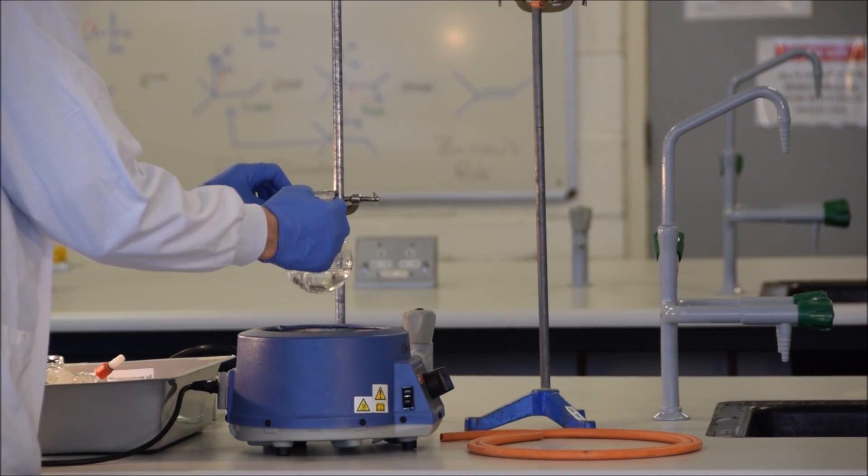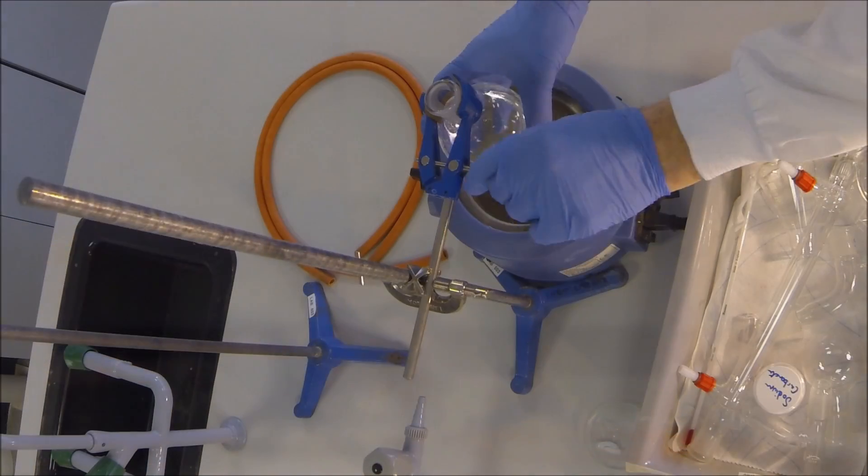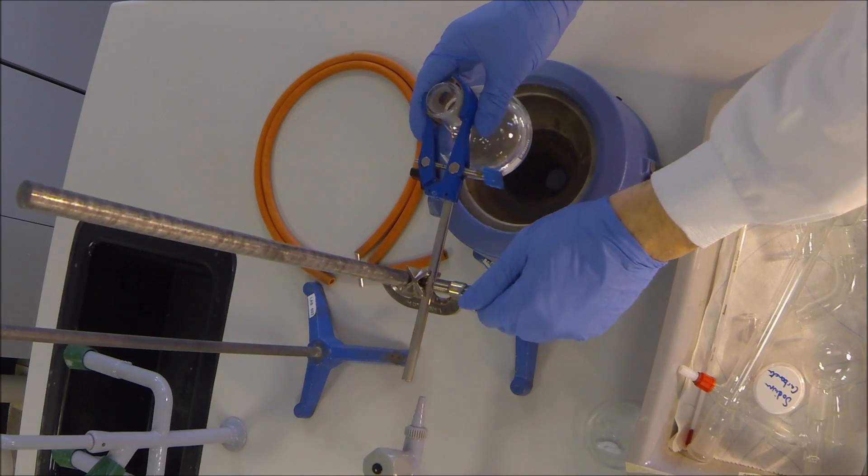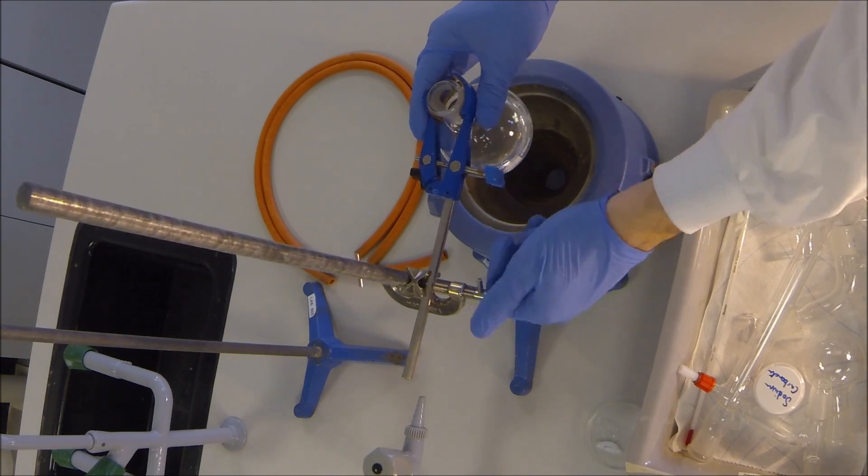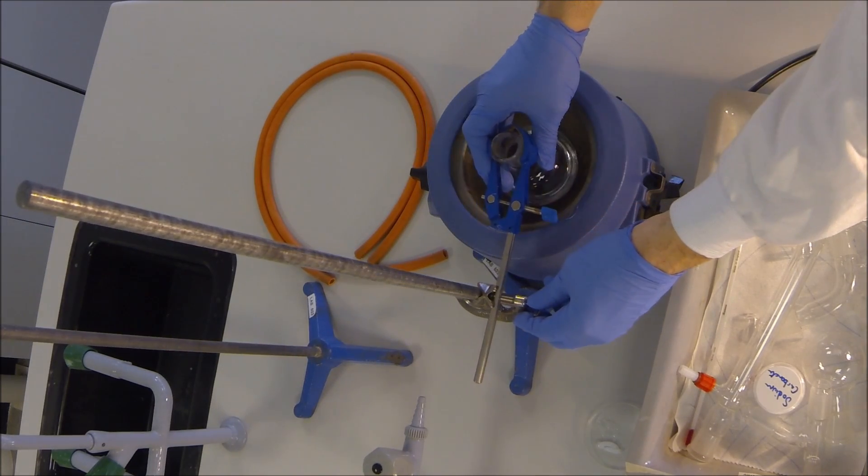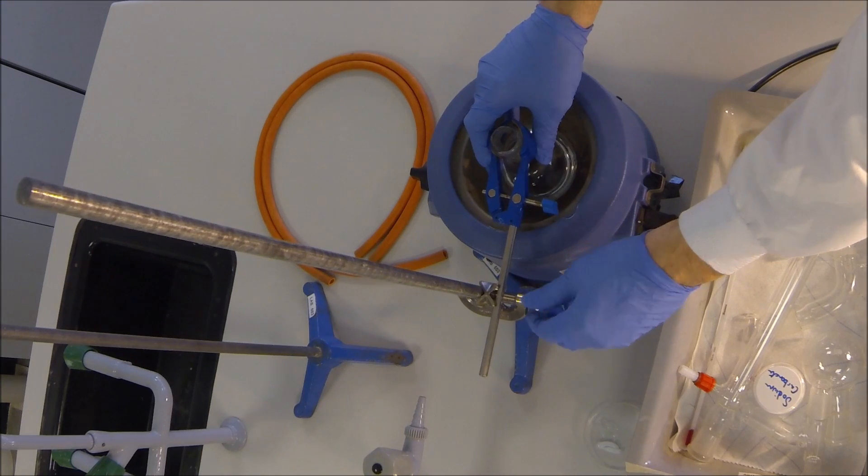The reaction mixture has been cooled in ice to ensure that it does not start reacting prematurely. So, the first thing we're going to do is make sure that it is securely held by the retort stand. Affix the clamp around the neck of the flask, ensuring that it is secure, and then lower it into position.